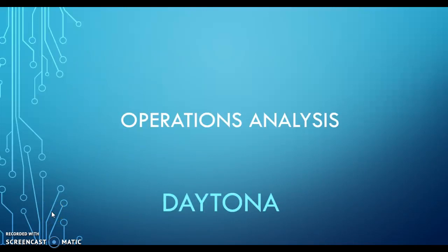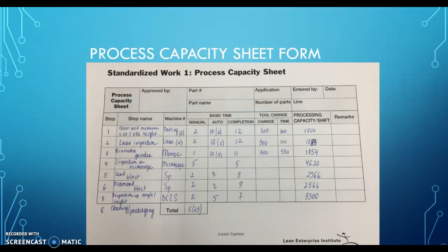Operation Analysis — Daytona. The process capacity chart is used to calculate the capacity of each machine, to confirm true capacity, and to identify and eliminate bottlenecks. Processing capacity per shift will be calculated from the availability production time, completion time, and tool change time for each workpiece.